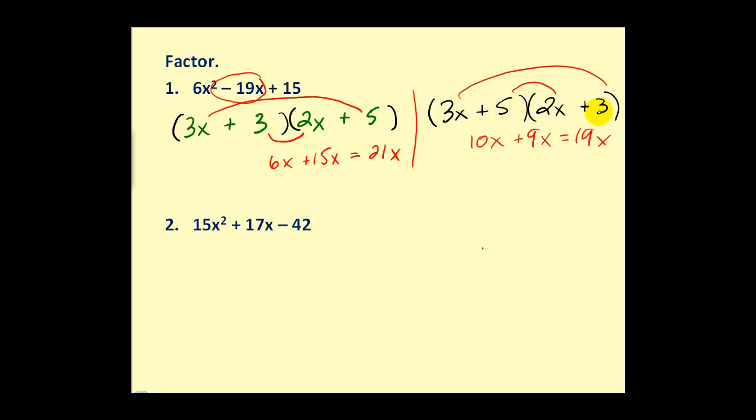We know that 5 times 3 equals 15 but so does -5 times -3. So let's try (3x - 5)(2x - 3). Let's check our products. Now we have -10x and -9x which gives us the -19x that we need. Through trial and error we have found the factors of that trinomial.